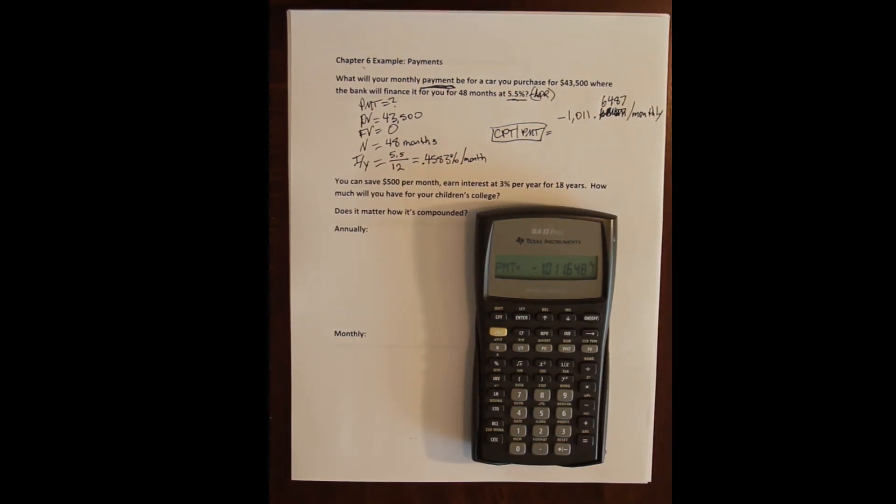I didn't even write the right number. Six four eight seven. But me not writing the right number actually leads me to my next point, which is that there is a rounding issue here. And the rounding issue comes from this step right here. When I converted this annual rate to a monthly rate I rounded to point four five eight three.